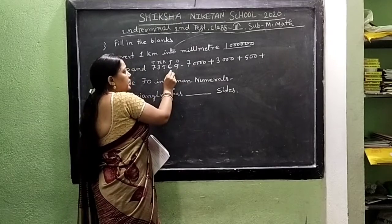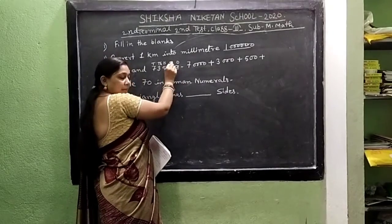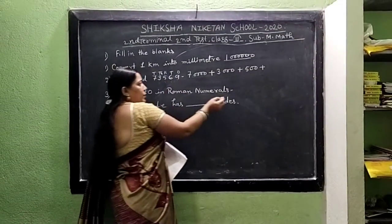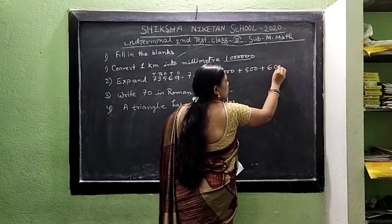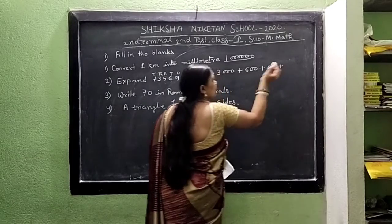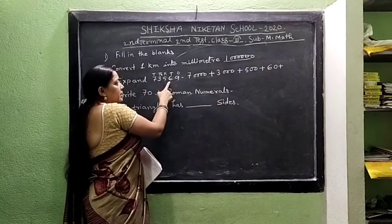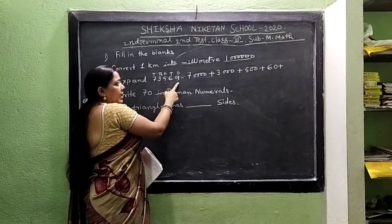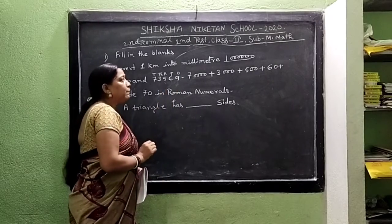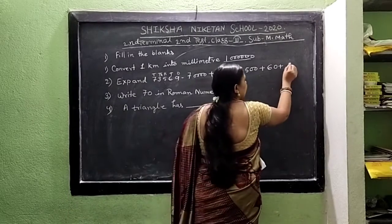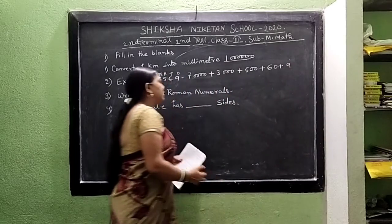Next number is 6. The 6 place value is 10. So we write here 6 and 1 zero. Next number is 9. The 9 place value is 1, so we write here 9. Math is complete.